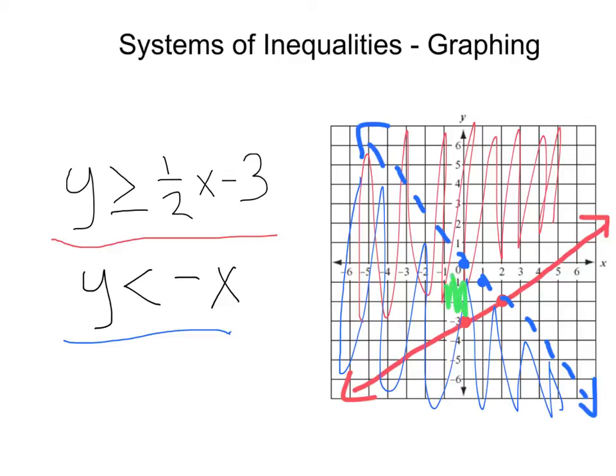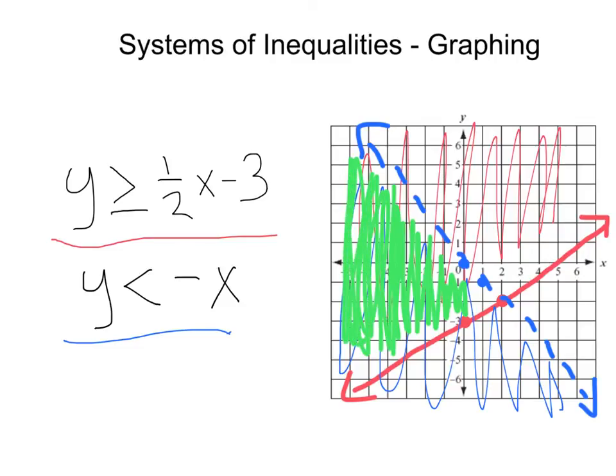And I'm going to go ahead and shade in my final answer with green, because I love avocados. And all of these points in here represent solutions to our whole system of inequalities. Just like we did with individual inequalities, we can pick a point and test it to confirm our answer.